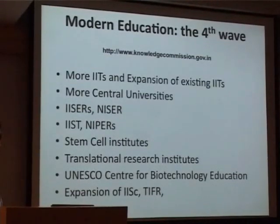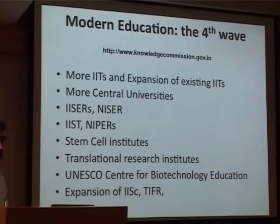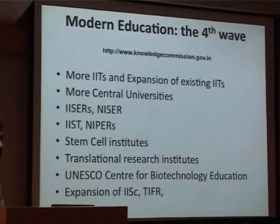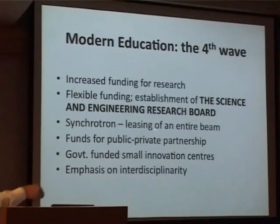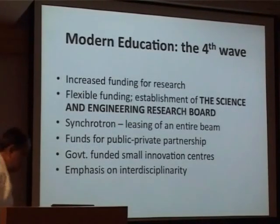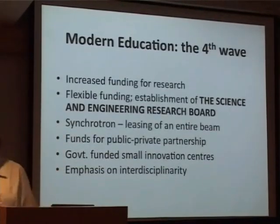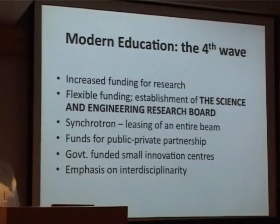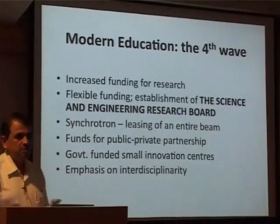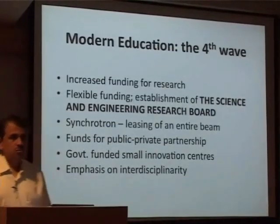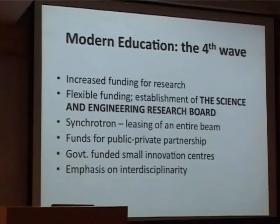But now, whenever you go to the government, they say you want to start one more in my state, we will give you double the money that you want. And there is increased funding for research. When I started, the typical grant - inflation corrected - I am now getting four times that grant. The simple reason is we have quadrupled the amount of money for research, but only doubled the number of scientists in the country, so each of us is getting more money.